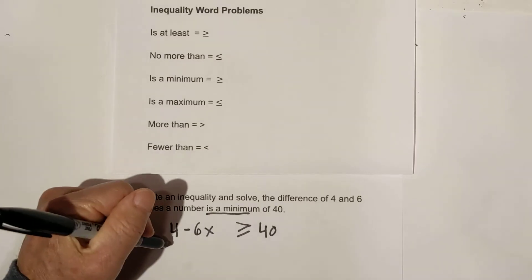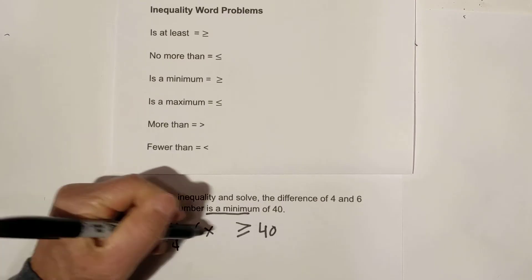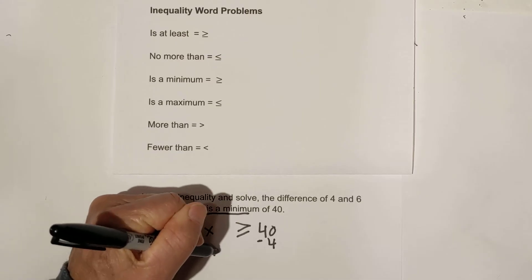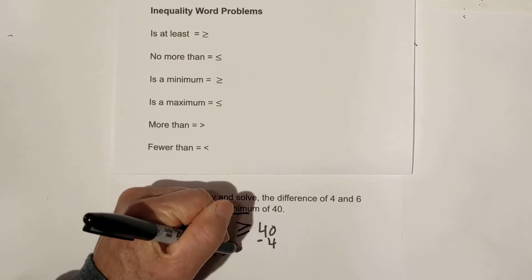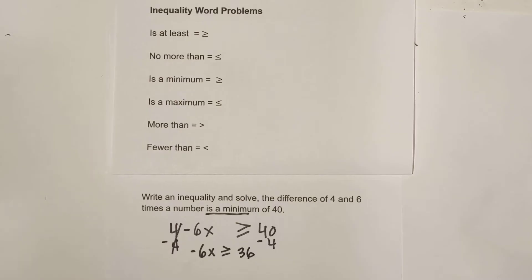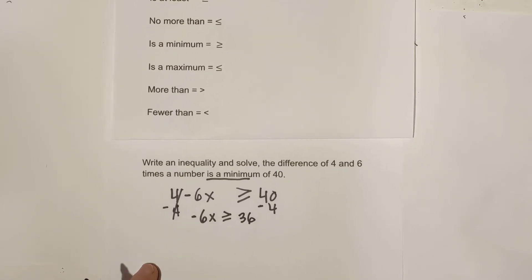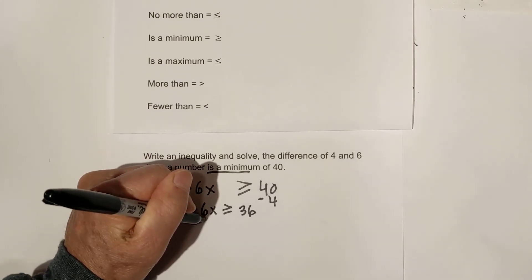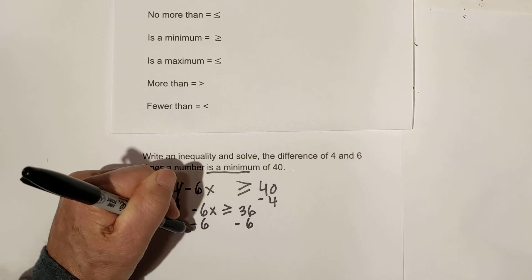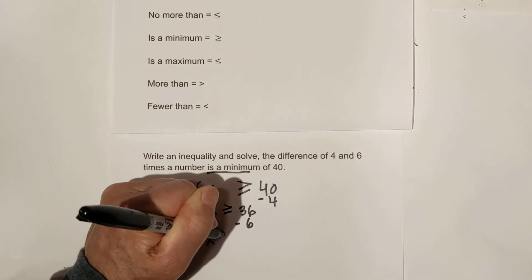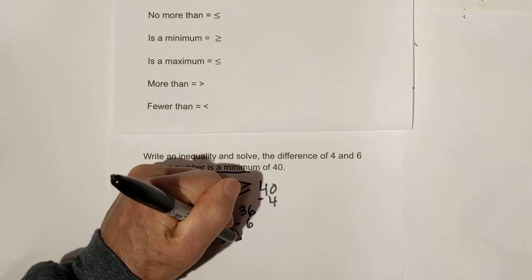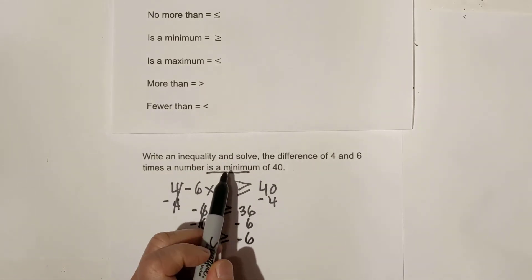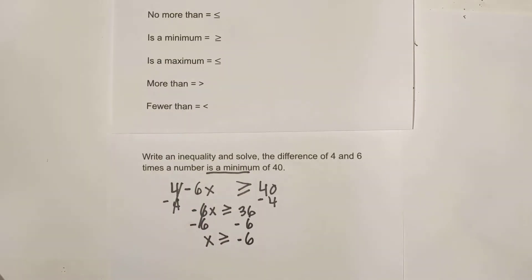Now let's subtract four from both sides. These cancel, so that becomes: negative 6x is greater than or equal to 36. We're going to divide each side by negative six. These cancel, so x is greater than or equal to negative six. Again, 'a minimum of' is greater than or equal to.